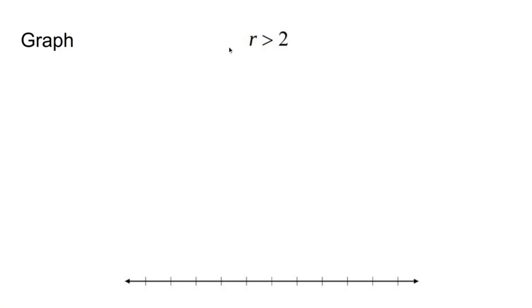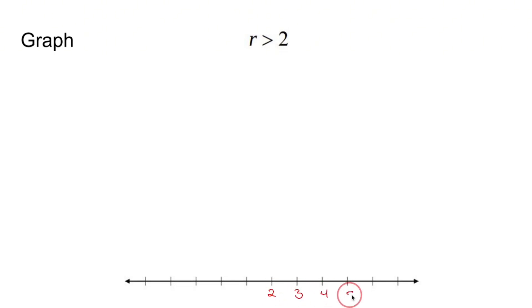We are being asked to graph r is greater than 2. What this means is r is going to represent any number larger than 2. Is it going to be equal to 2? No. Any number — decimals, fractions — larger than 2. So to make our number line, we go down here, put 2 wherever, and complete the rest of the number line if you're given a blank one.